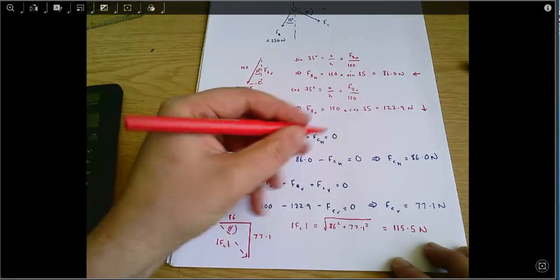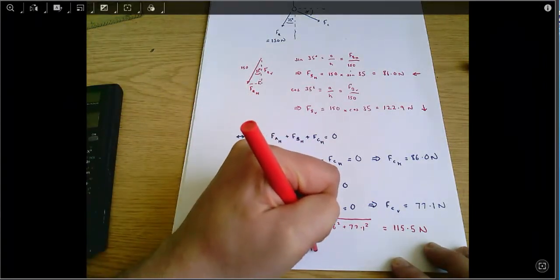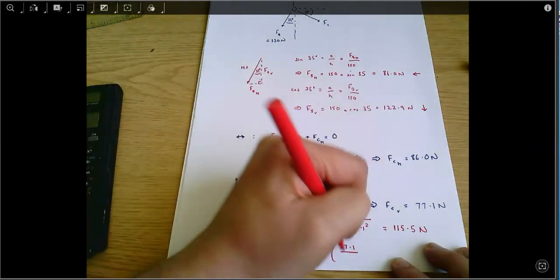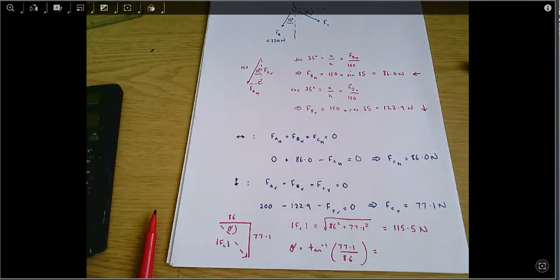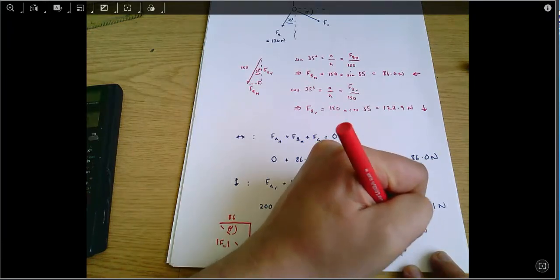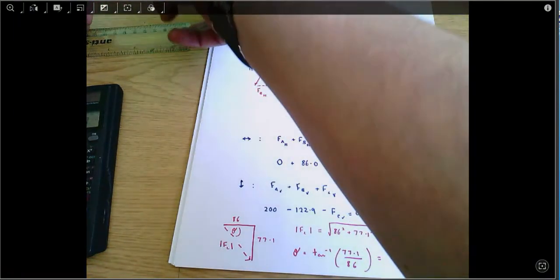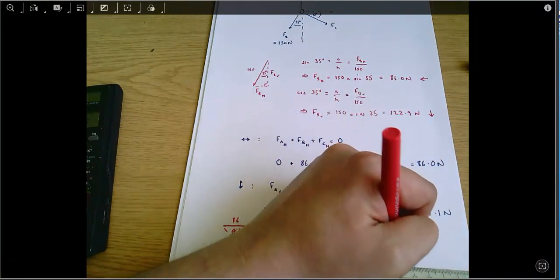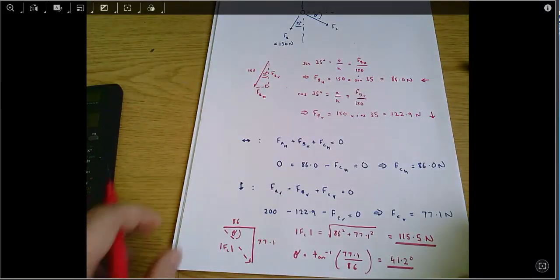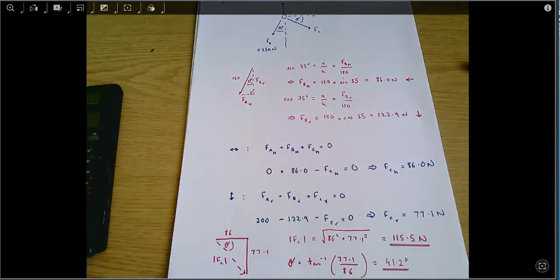And tan theta equals opposite over adjacent. So theta equals tan to the minus one, 77.1 divided by 86. That's opposite over adjacent. And that is 41.2 degrees. And those are my two answers. The things I was asked for are the magnitude of FC and the angle theta. I'll just underline those to show that they are my final answers. And that's the complete solution.